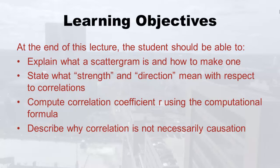Here's what you're going to learn. At the end of this lecture, you should be able to explain what a scattergram is and how to make one, state what strength and direction mean with respect to correlations, compute correlation coefficient r using the computational formula, and describe why correlation is not necessarily causation.